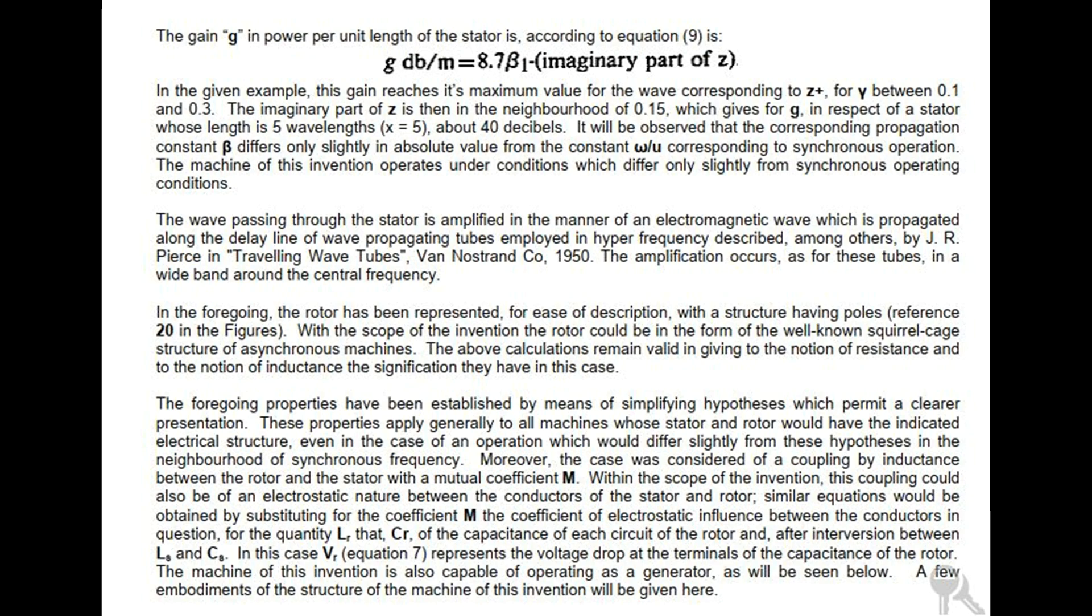The amplified wave corresponds to the root z-plus. The gain g in power per unit length of the stator is, according to equation 9, g = -2β·Im(z-plus). In the given example, this gain reaches its maximum value for the wave corresponding to z-plus for delta between 0.1 and 0.3. The imaginary part of z is then in the neighborhood of 0.15, which gives for g, in respect of a stator whose length is 5 wavelengths, x equals 5 lambda, about 40 decibels. It will be observed that the corresponding propagation constant differs only slightly in absolute value from the constant omega-zero/U corresponding to synchronous operation. The machine of this invention operates under conditions which differ only slightly from synchronous operating conditions.